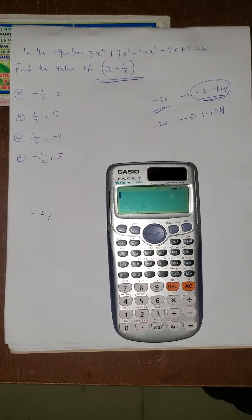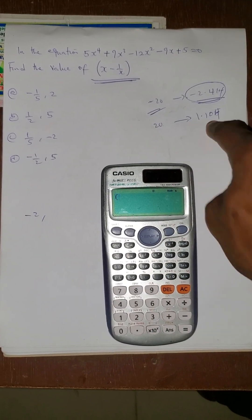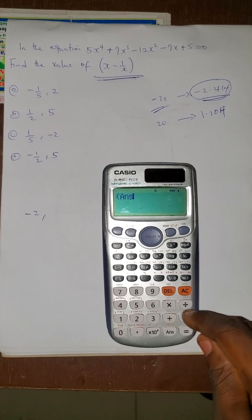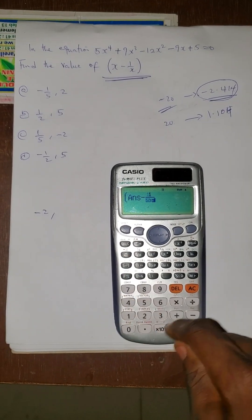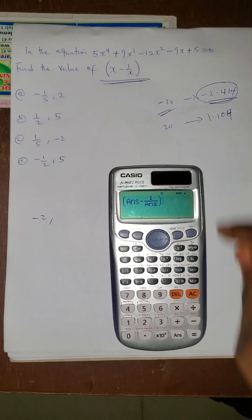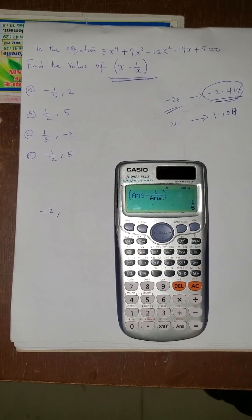So press AC. Your value will still be, that means this is another x, it's already saved on the calculator. Then I'll be answer - 1 / answer, because the value is to press x - 1/x. That's the value we have to find. Press equals to. The answer is 1/5.